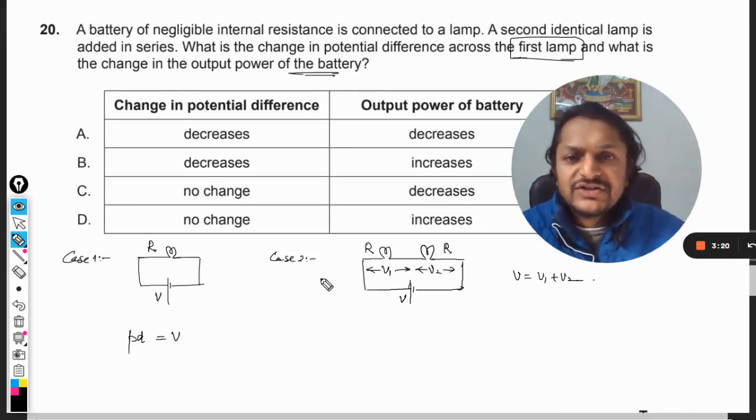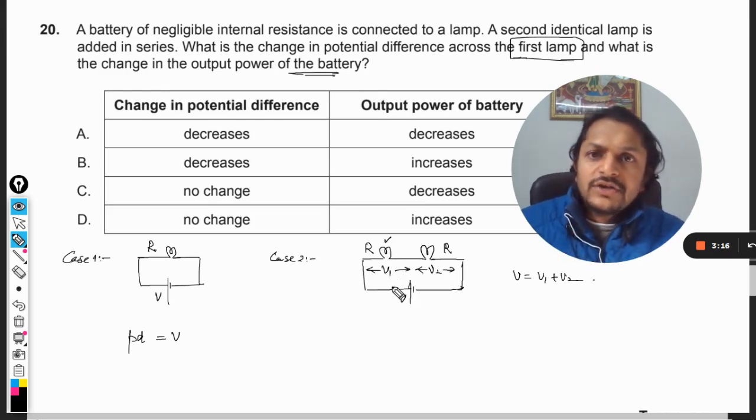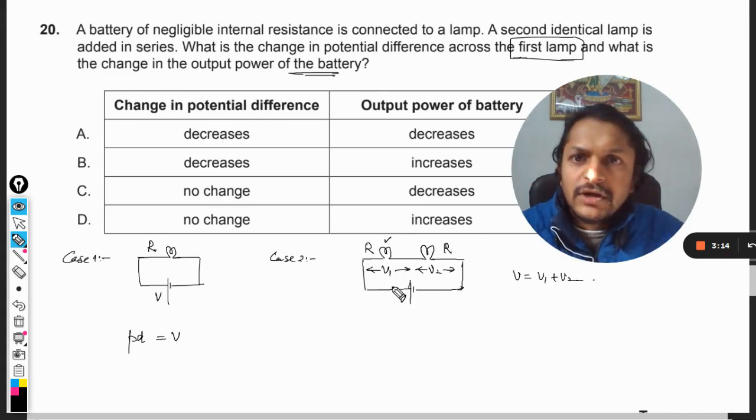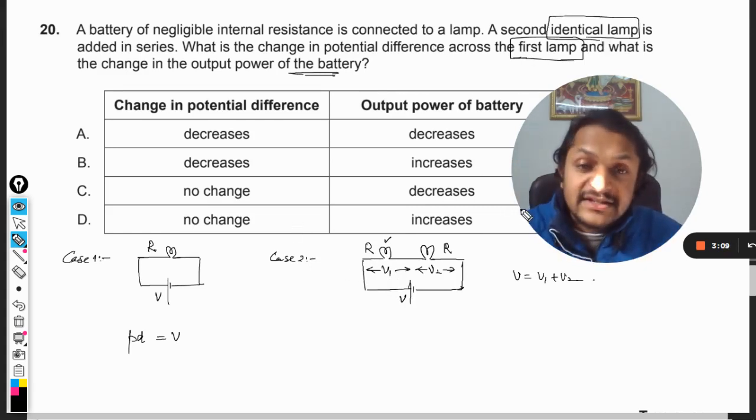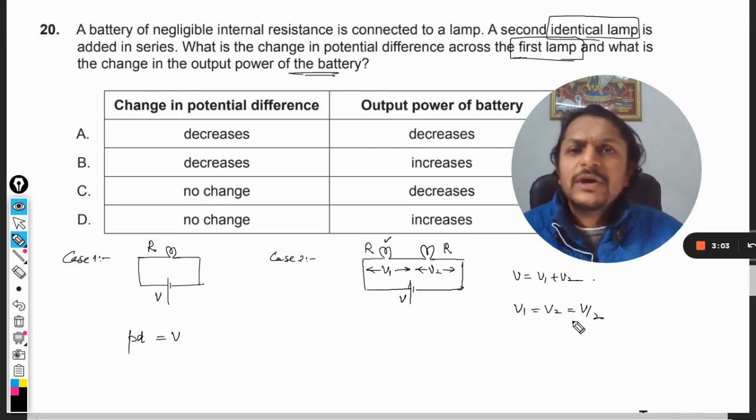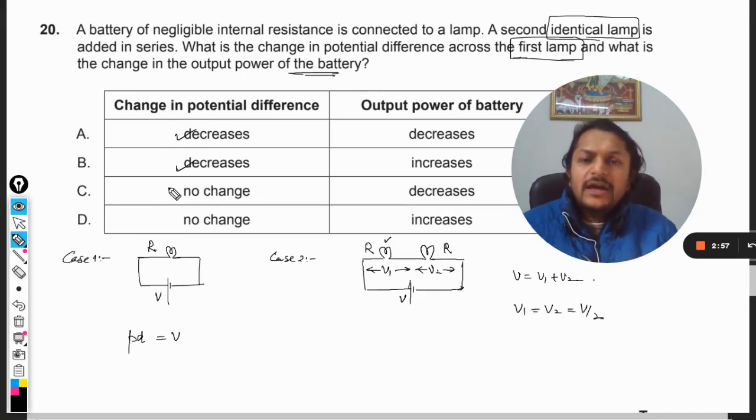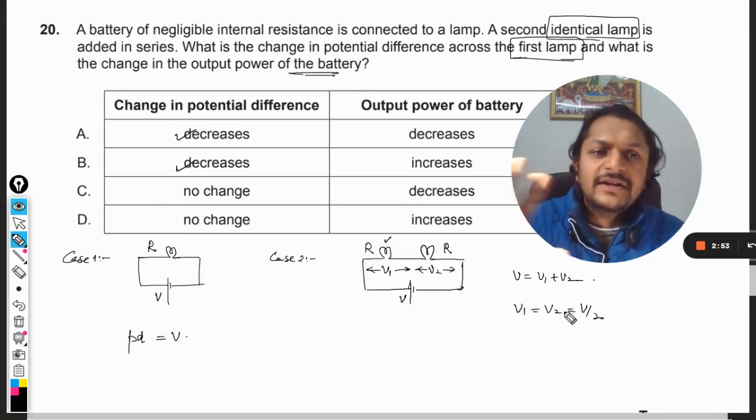Now obviously the potential difference across this same lamp decreases. Because we know that the lamps are identical, the resistances are the same. Because of the similarity, we obviously know that V1 will be equal to V2 and that will be equal to half of the total potential. So the change in potential difference will be decreasing, because the potentials have decreased - in this case it is V, here it is V by 2.